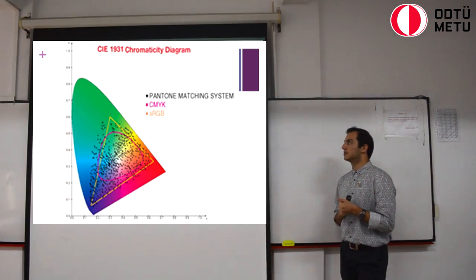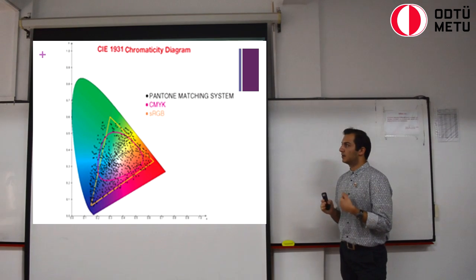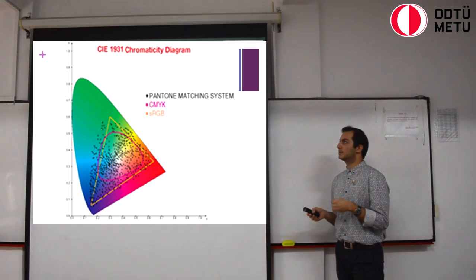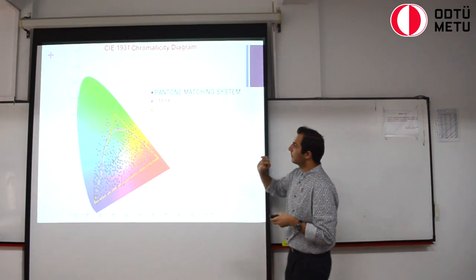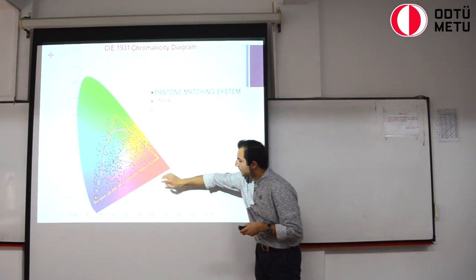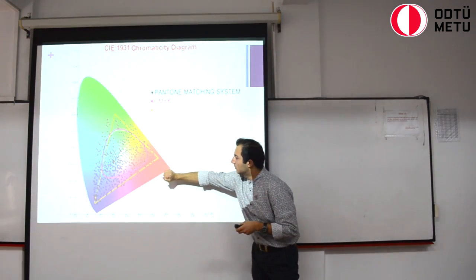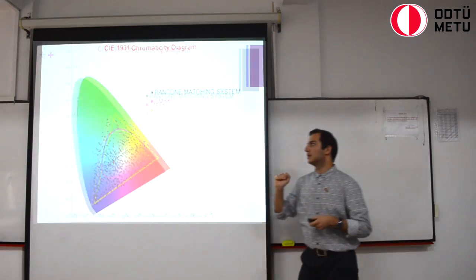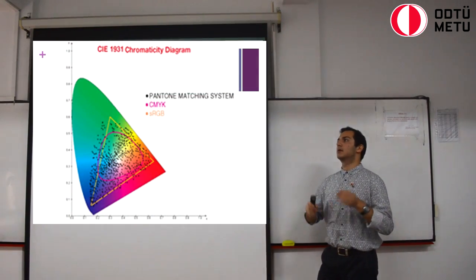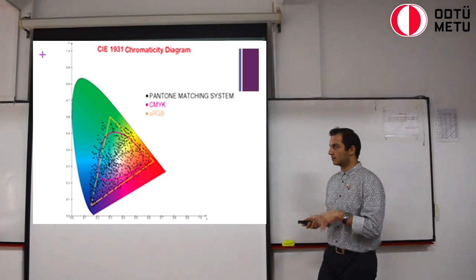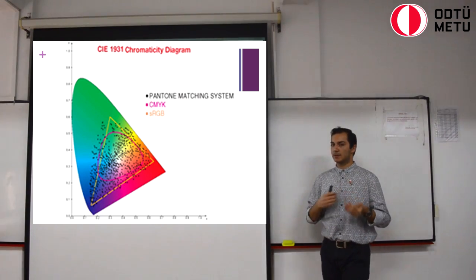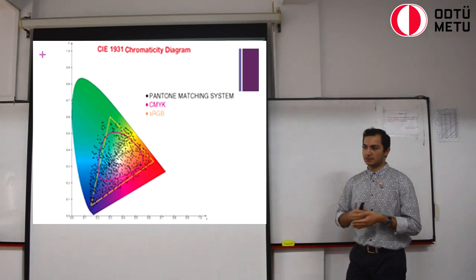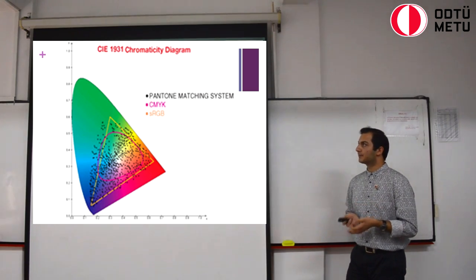And now I want to draw your attention to this graph that I borrowed from nPower's article on Pantone matching system's qualities. As you can see, even though the Pantone matching system reaches further beyond the color spectrum than RGB and CMYK, RGB and CMYK provide a continuous spectrum of colors, which is basically what you want if you're not printing something that is really high quality.